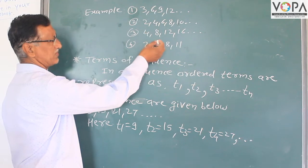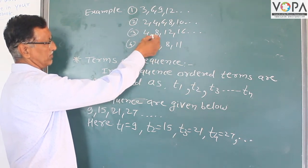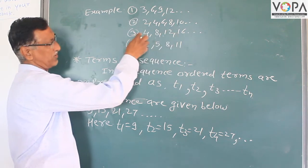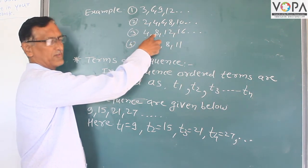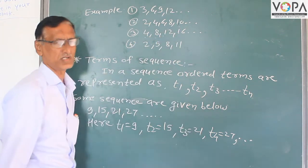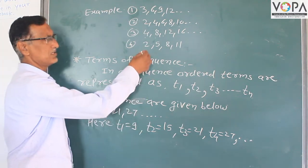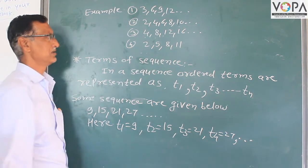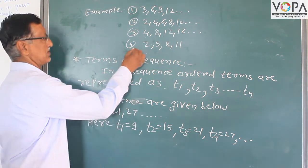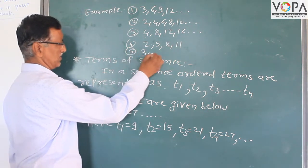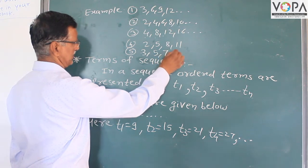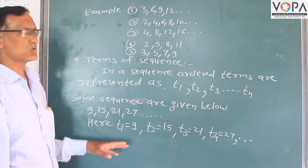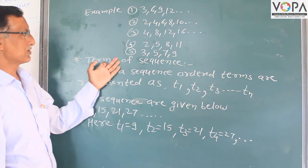Another example is 4, 8, 12, 16: 4 plus 4 is 8, 8 plus 4 is 12, 12 plus 4 is 16. Another sequence is 2, 5, 8, 11, and so on. Similarly, 3, 5, 7, 9 and so on are also given examples of sequences.